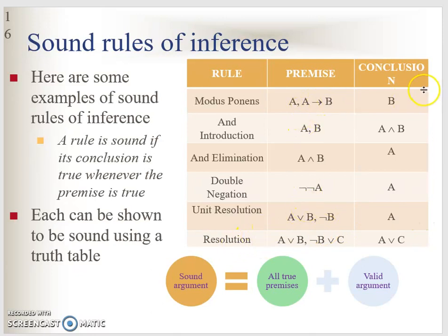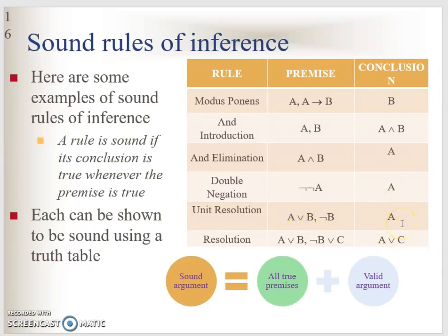For modus ponens: given A, and A implies B, the conclusion is B. For AND-introduction: given A and B, the conclusion is A AND B — both must be true at the same time. For AND-elimination: from A AND B, you can conclude A. Double negation: NOT NOT A gives you A. For unit resolution: A OR B with NOT B — since they contradict, you eliminate B and conclude A. For full resolution: A OR B with NOT B OR C — eliminate the B and NOT B to conclude A OR C.